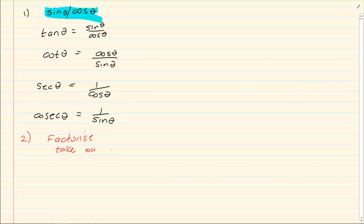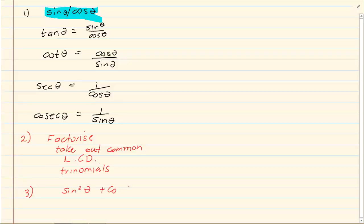Factorizing uses all your previous knowledge from algebra — take out common denominators, trinomials, any form of factorizing. The last key thing when doing identities is the special identity where sin squared plus cos squared is equal to 1.